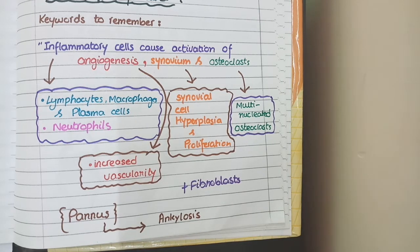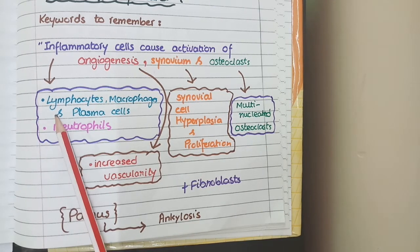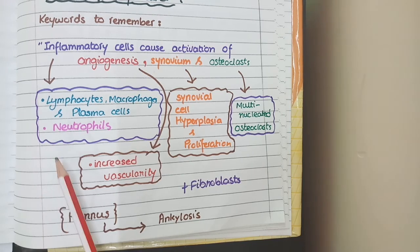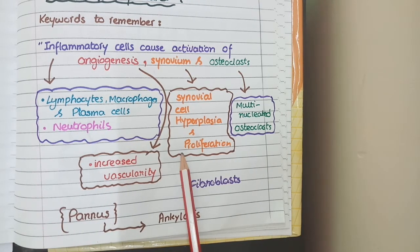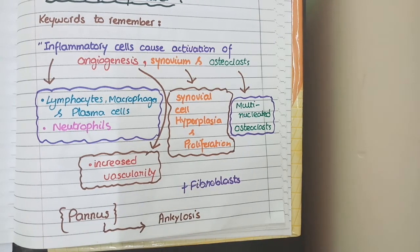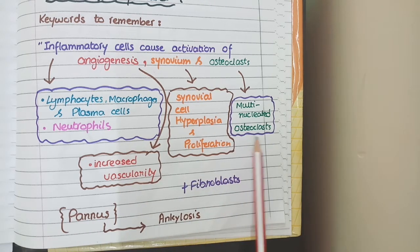Overall, let's revise the microscopic features of rheumatoid arthritis. You see lymphocytes, macrophages and plasma cells. You also see neutrophils. You see synovial cell hyperplasia and proliferation. You see increased fibrovascular tissue. And you see an increased number of multinucleated osteoclasts.